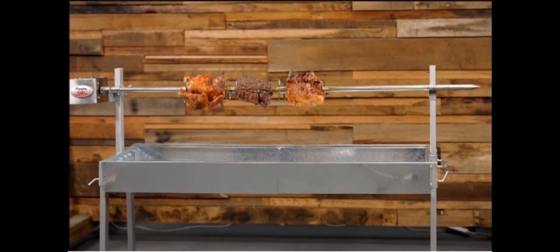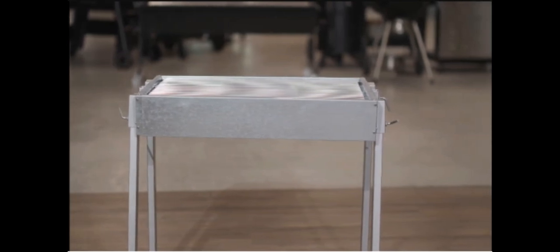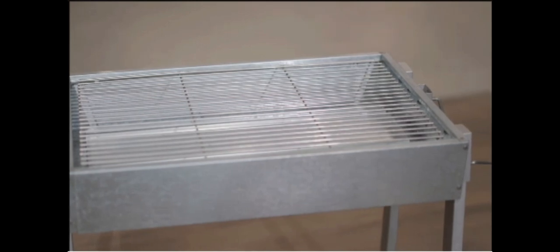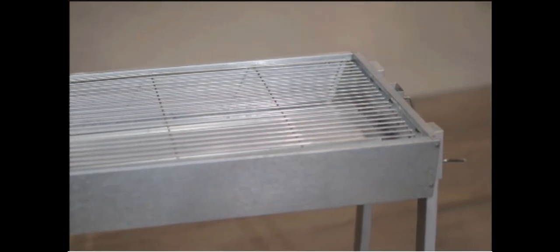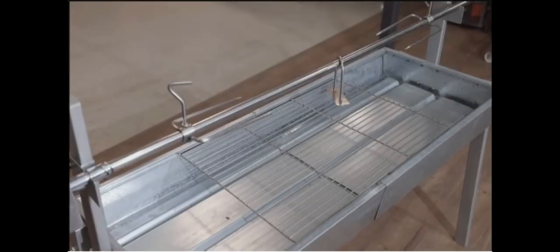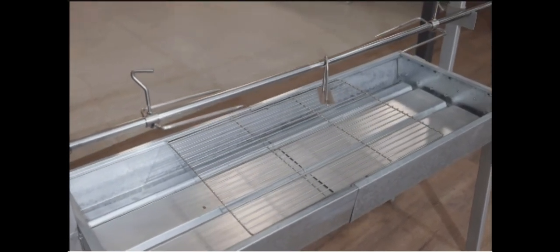In addition to the rotisserie function, the Extendable Spit Roaster also comes with a large cooking grill measuring 70cm by 48cm, which is perfect for grilling steaks, sausages, chicken wings or veggies. The grill sits 74cm from the ground so you won't be bending over breaking your back while grilling.